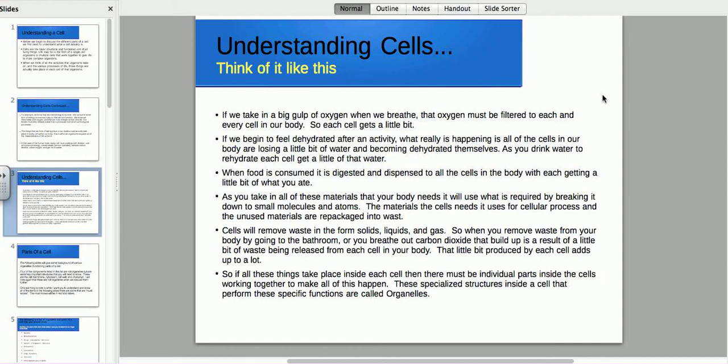So think of this. If you take a big gulp of oxygen when you breathe, the oxygen must be filtered to each and every cell in the body. So each cell gets a little bit. And again, this slide is going to go on to talk to you a little bit about what I just kind of mentioned, that each cell has to be hydrated, and each cell needs a little bit of that water. When you take in food, you eat a big old steak, each cell is going to get a little bit of the nutrients from that entire steak. It's going to get dispersed to each of them.